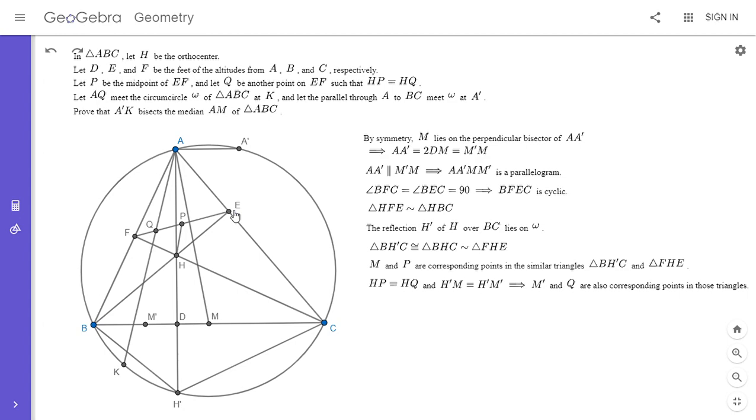And then I'm going to notice one more thing. Not only are these two triangles similar, BH prime C and FHE, but the whole quadrilateral A prime BH prime C is similar to AFHE.